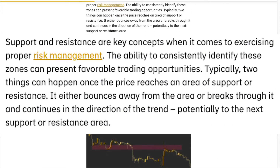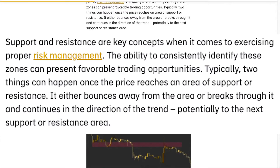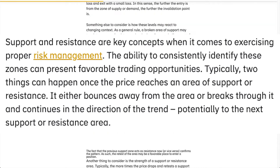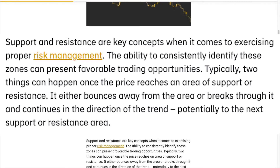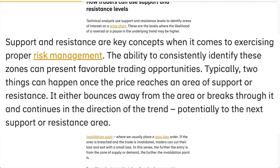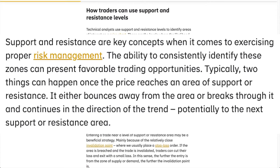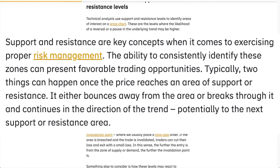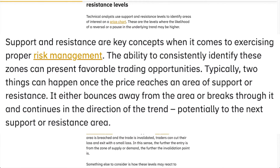Support and resistance are key concepts when it comes to exercising proper risk management. The ability to consistently identify these zones can present favorable trading opportunities. Typically, two things can happen once the price reaches an area of support or resistance: it either bounces away from the area or breaks through it and continues in the direction of the trend, potentially to the next area of support or resistance.